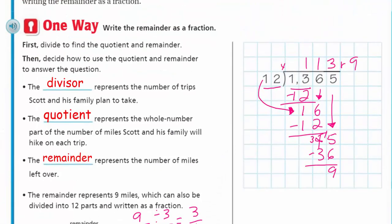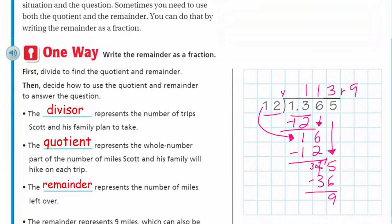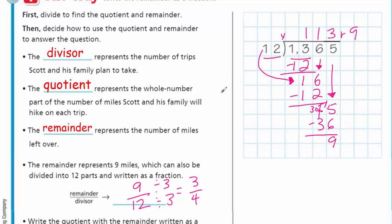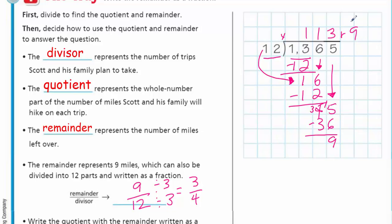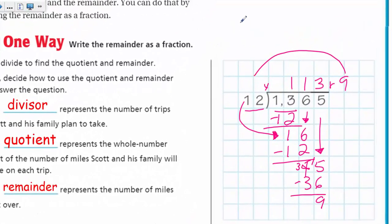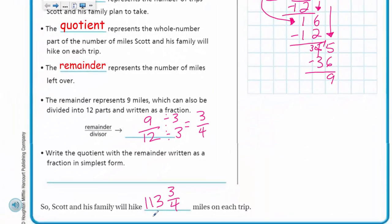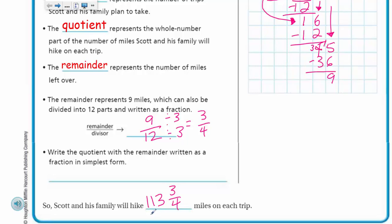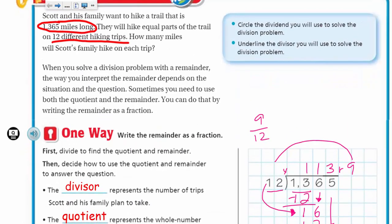So what did we learn in this activity? The big thing we learned was understanding what to do with the remainder. In this case, we took the remainder and represented it as a fraction — 9/12 — because we were dividing miles, and it's important to know exactly how many miles. Just saying 113 doesn't give us the most accurate answer. We could estimate about 113 or 114, but here we wanted the exact distance they'd hike on each of the 12 trips.